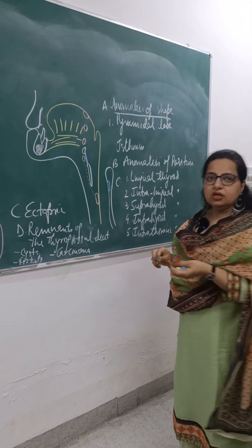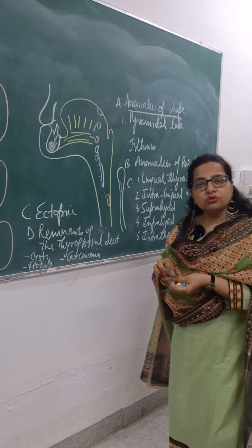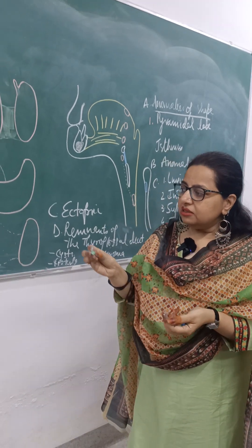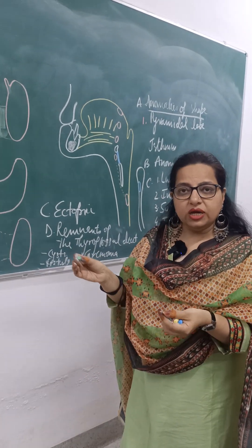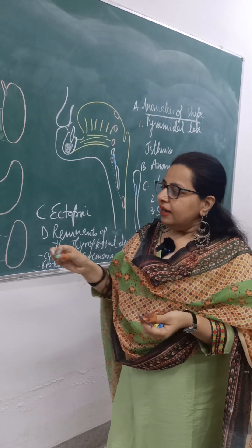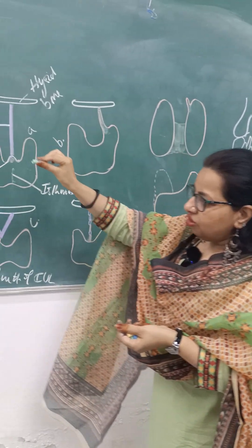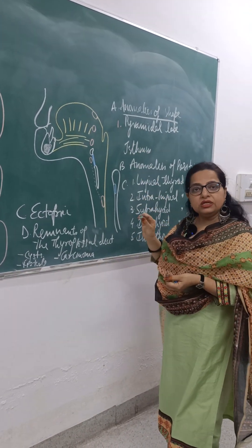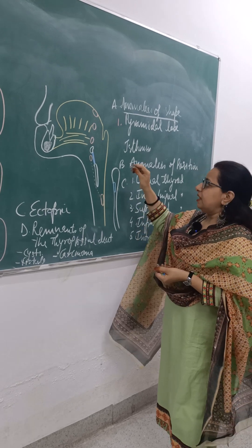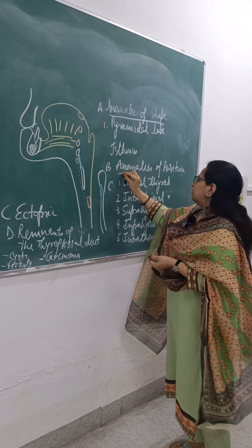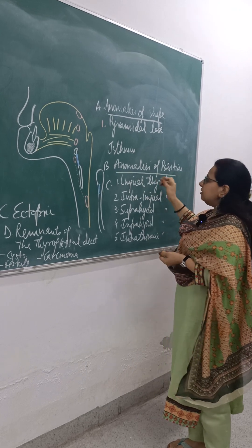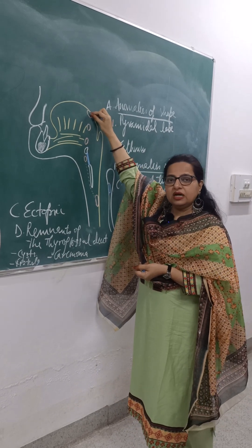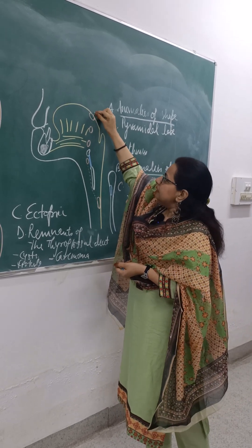Then we come to the anomalies of position. As the thyroglossal duct travels its passage to reach in front of the trachea where the thyroid gland is normally present, the thyroid tissue may get arrested anywhere during that passage — these are classified as anomalies of position. The first is lingual thyroid, which is present under the mucosa of the tongue.